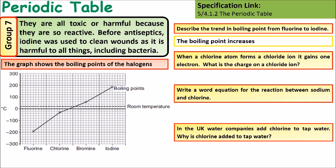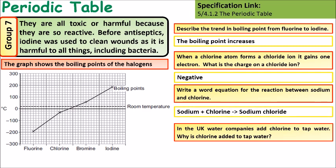And also in the UK, we add chlorine to tap water, suggest some reasons why. So the answers: as you move down, the boiling point increases. We form negative ions. The reaction would be sodium plus chlorine forms sodium chloride. And we add chlorine to water to kill bacteria.